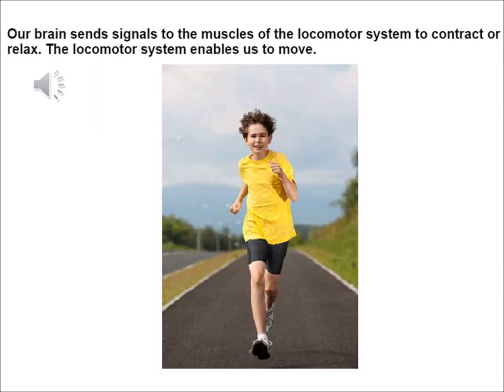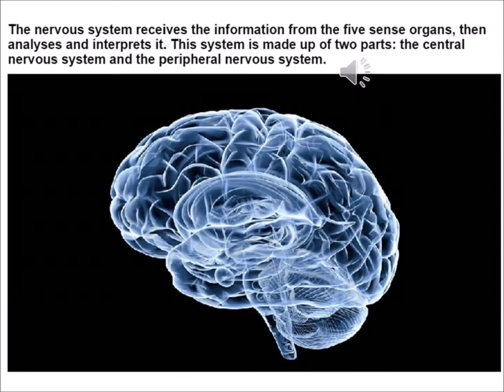Our brain sends signals to the muscles of the locomotor system to contract or relax. The locomotor system enables us to move. The nervous system receives the information from the five sense organs, then analyzes and interprets it.